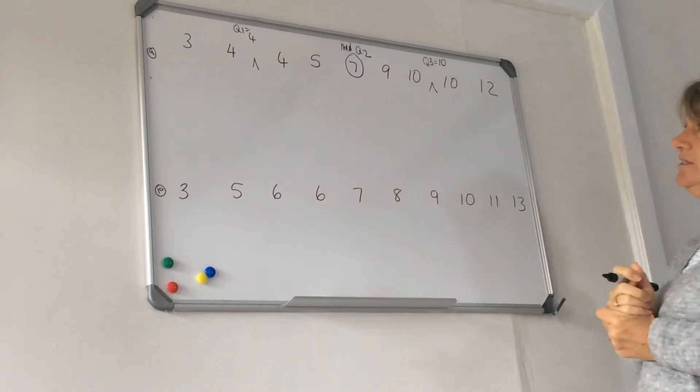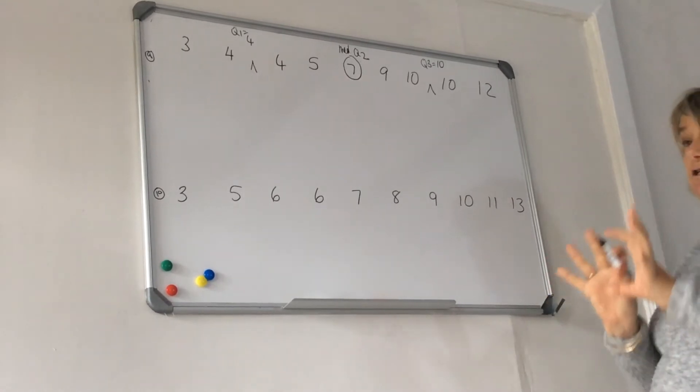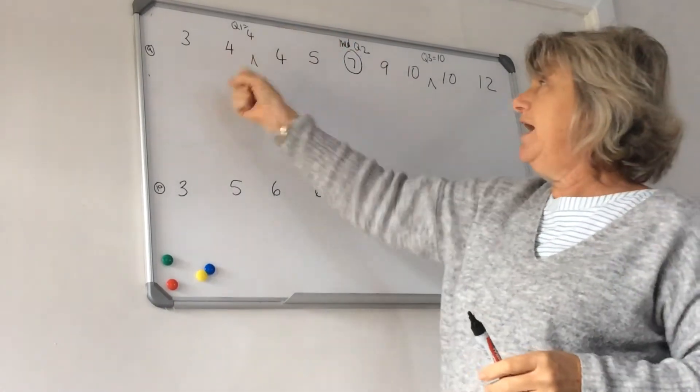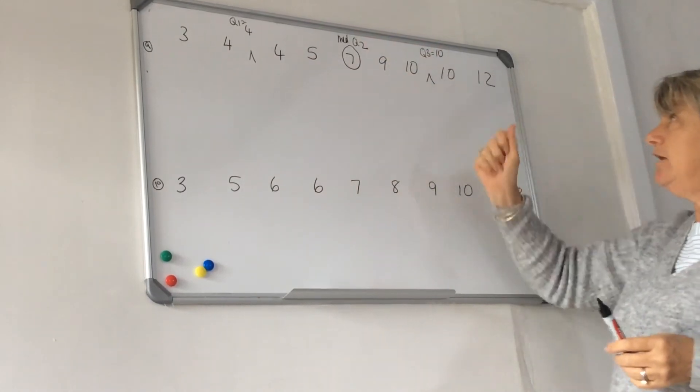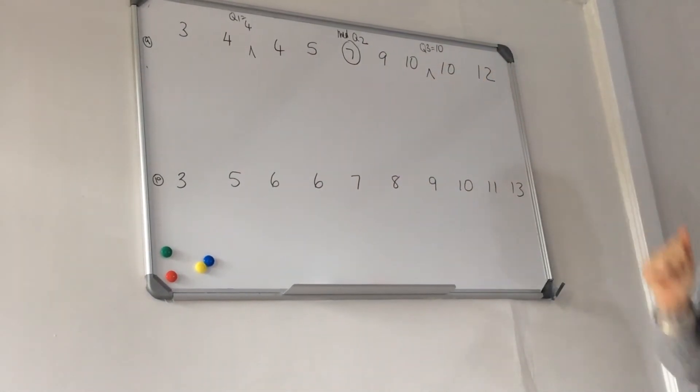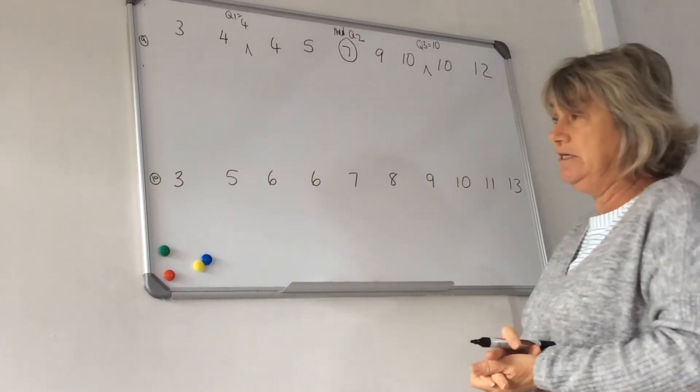So what you're going to see now is my quartiles have divided my data very neatly into even parts. Two values, then quartile one. Two values, then quartile two. Two values, then quartile three. Two values. If you do this correctly, you'll always find your data is divided up very neatly and evenly.